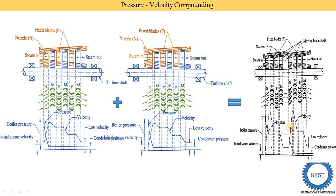Now we can understand this pressure and velocity compounding. Here you see in this nozzle the pressure is reduced from boiler pressure to condenser pressure. In pressure and velocity compounding, the pressure is reduced in two stages. In the first nozzle, the pressure is reduced from boiler pressure to partial pressure, then it is constant. Then it enters the second nozzle where pressure is reduced and velocity is increased. In this second stage the pressure is reduced from partial pressure to condenser pressure, and the velocity is reduced in the moving plates and fixed plates — both parameters are constant.